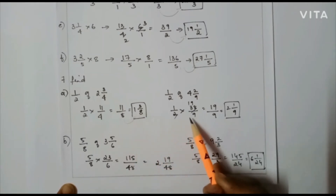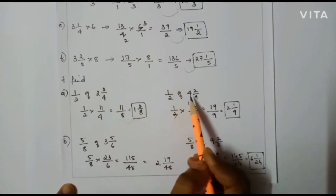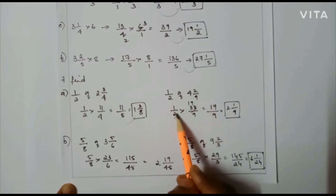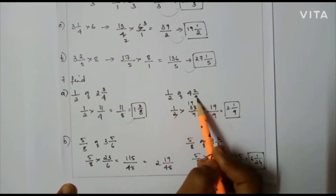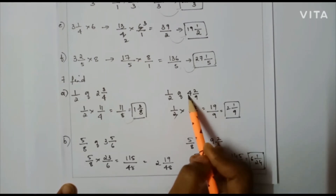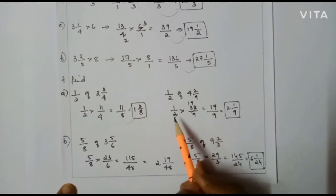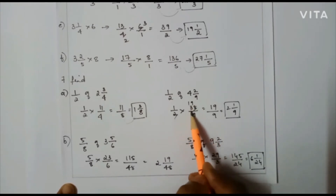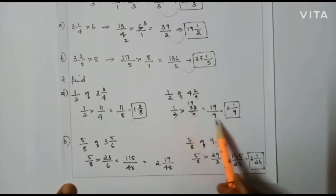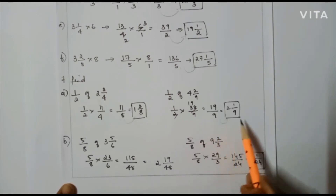Next case: 1/2 of 4(2/9). Convert: 9×4=36, plus 2 = 38/9. So 1/2 × 38/9. I can cancel here: 2 divides 38 giving 1 and 19. So 1 × 19 = 19, and 1 × 9 = 9, giving 19/9. Converting to a mixed fraction gives 2 and 1/9.